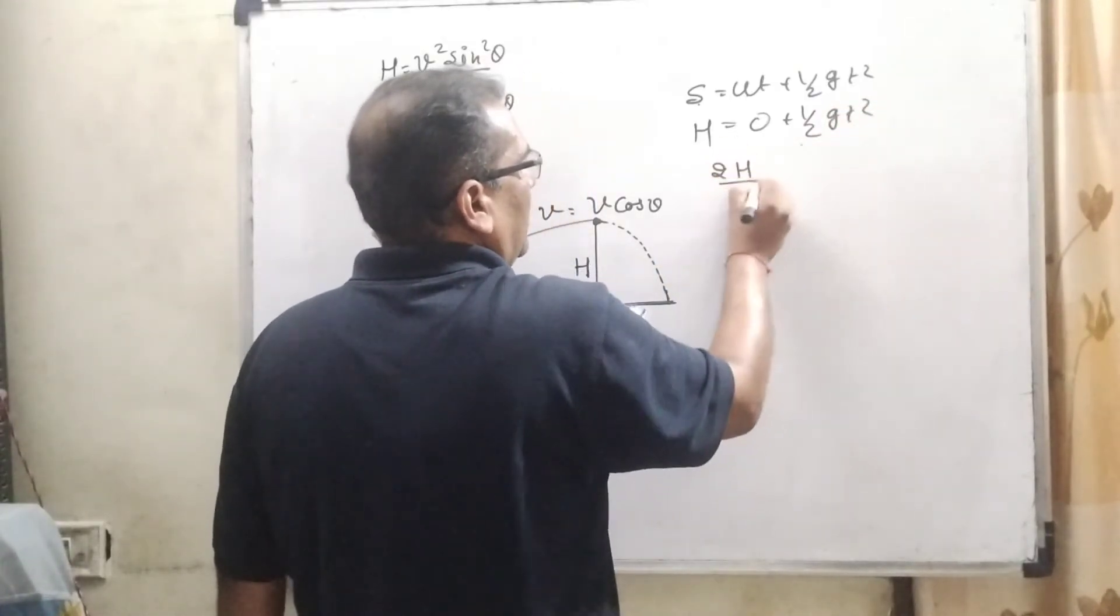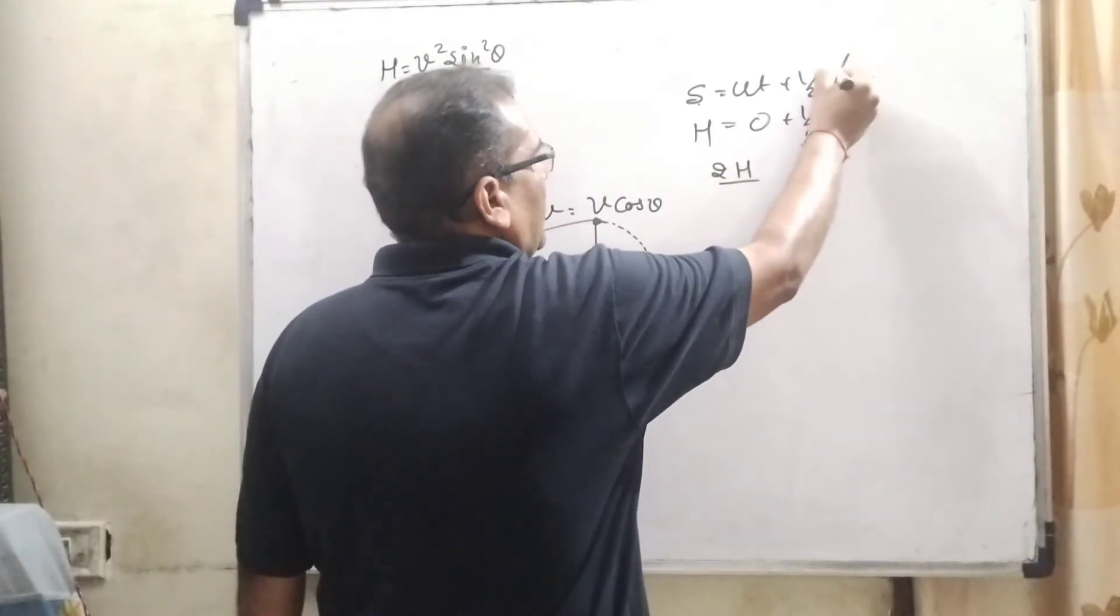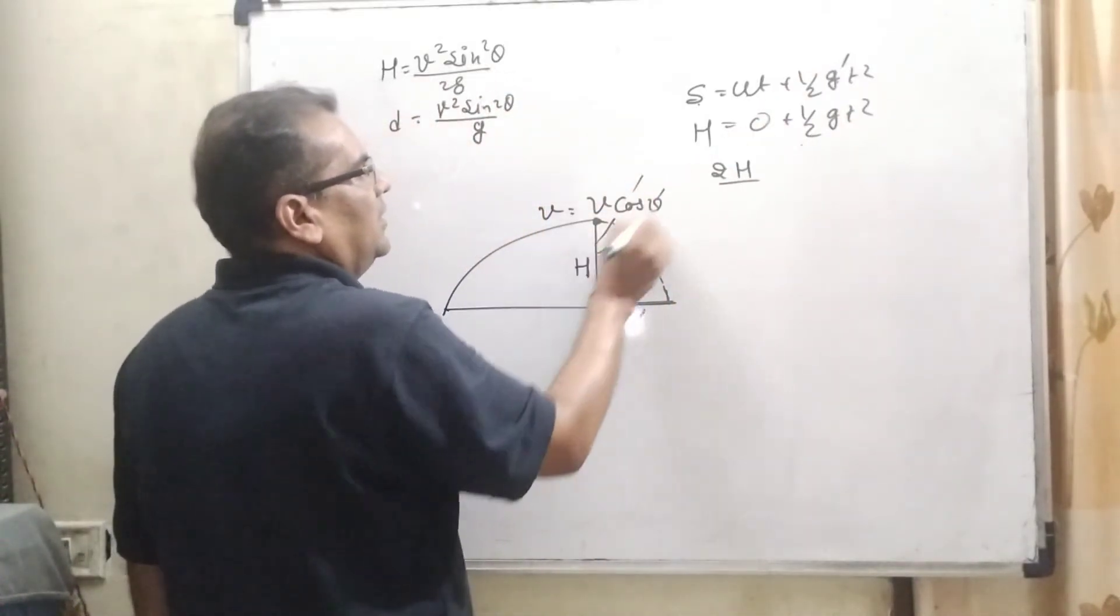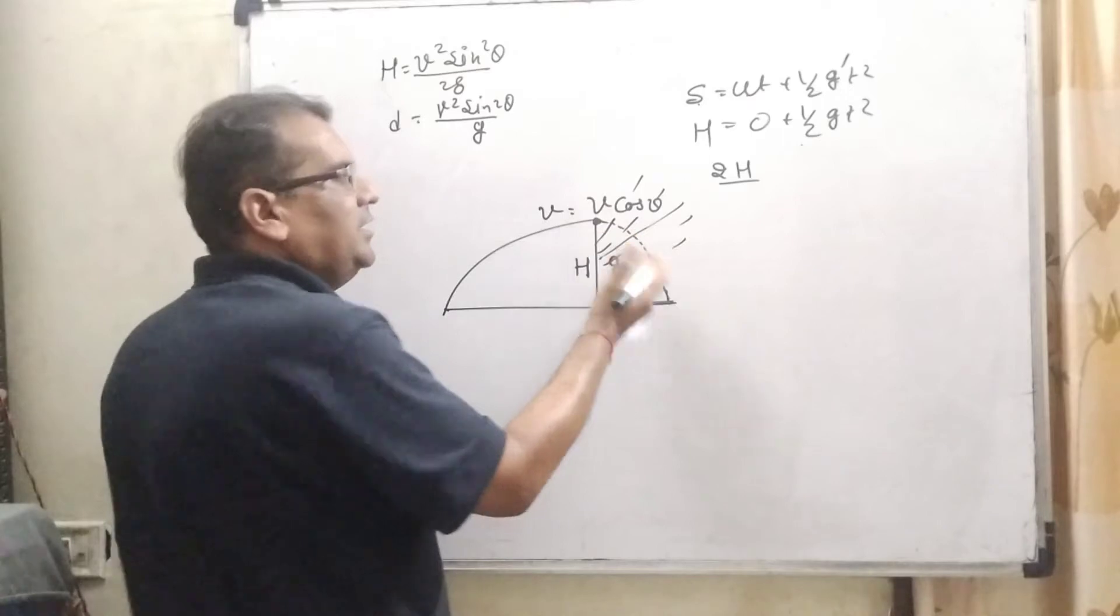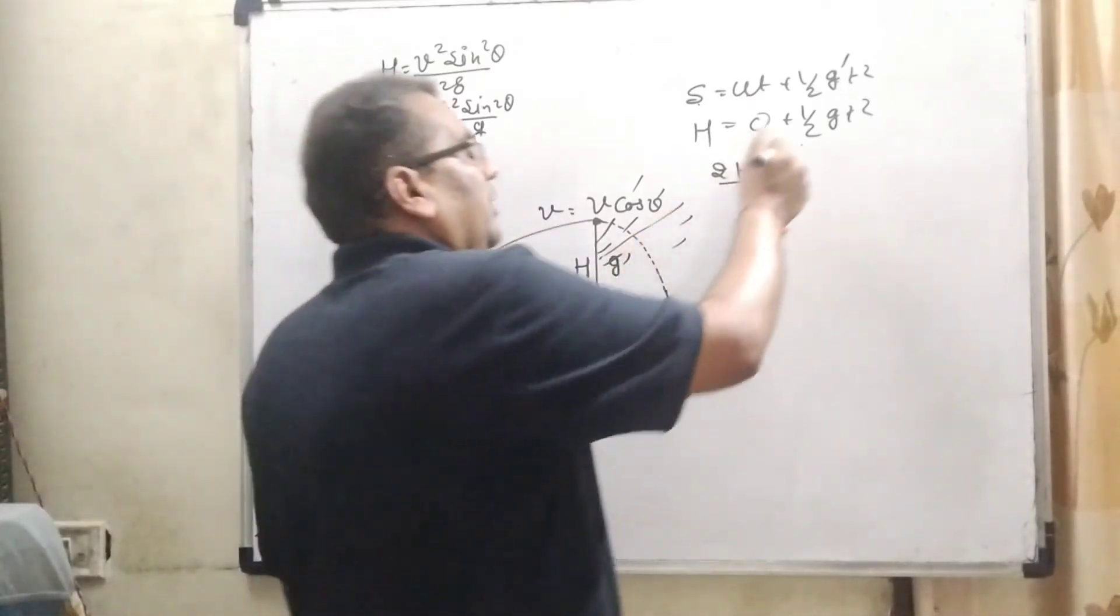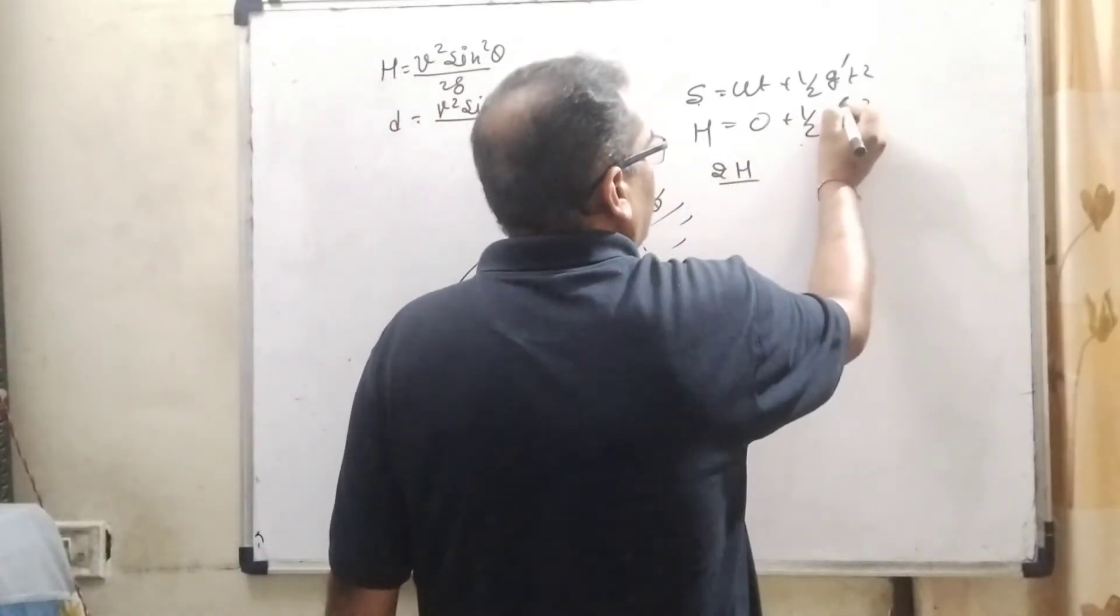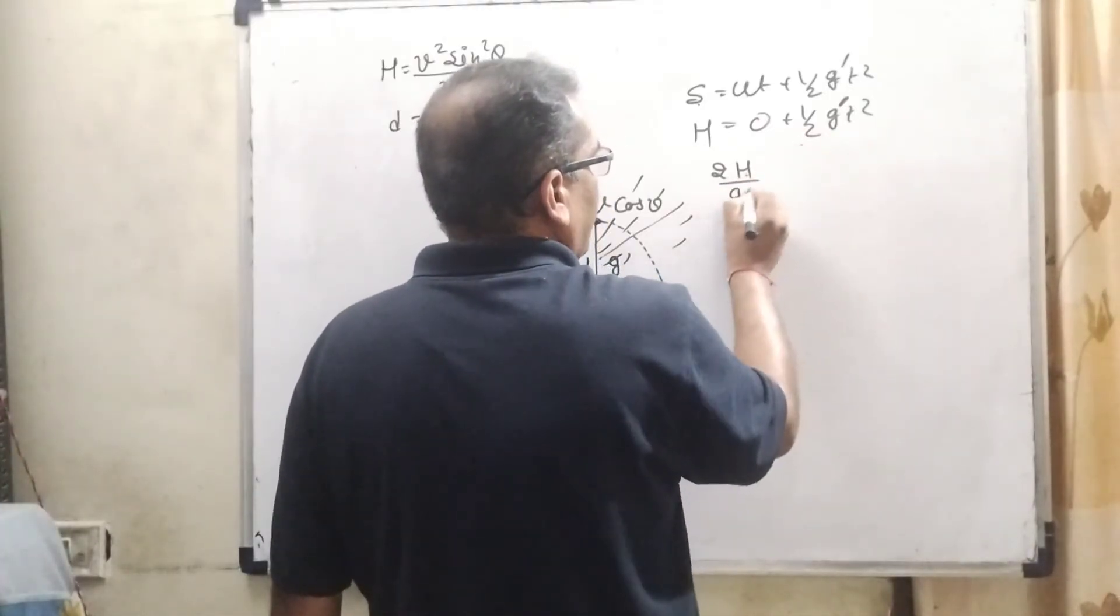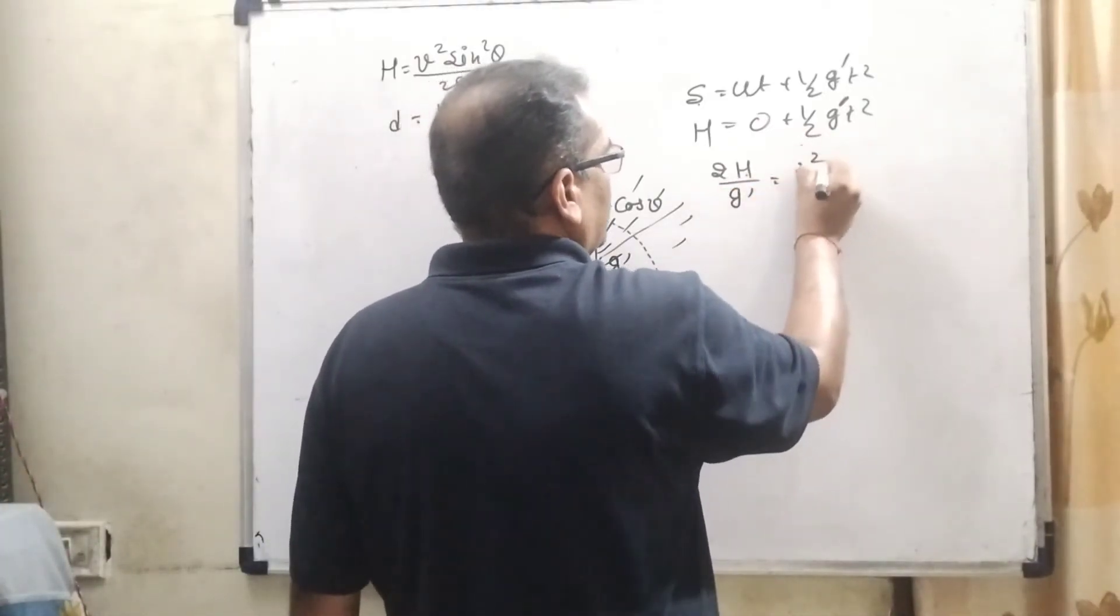Then 2h upon, here in the place of g, can be written as g dash because in this region acceleration due to gravity is changed. Therefore 2h by g dash equals t squared, then t can be written as root 2h by g dash.